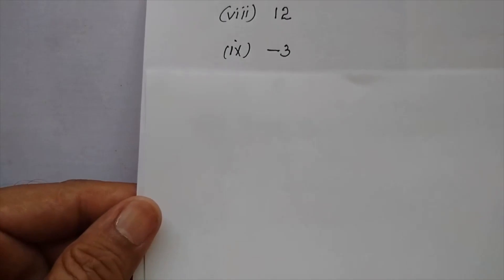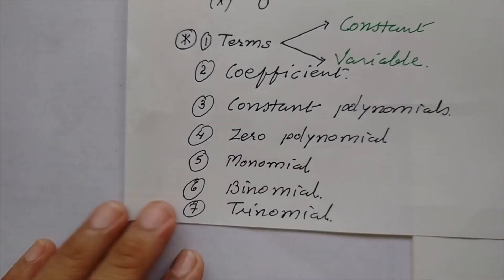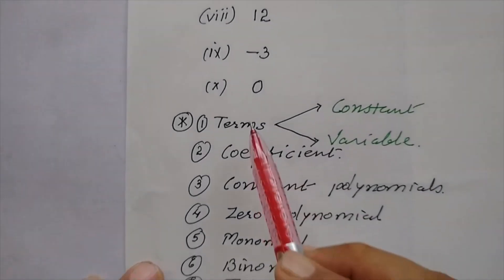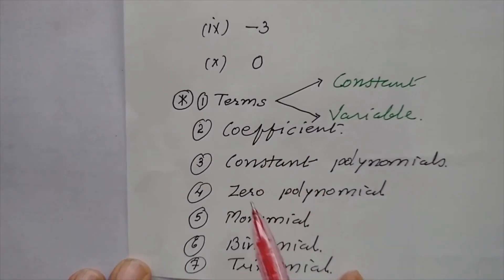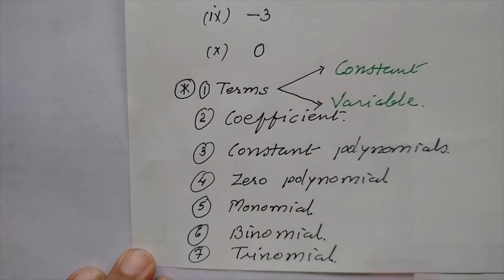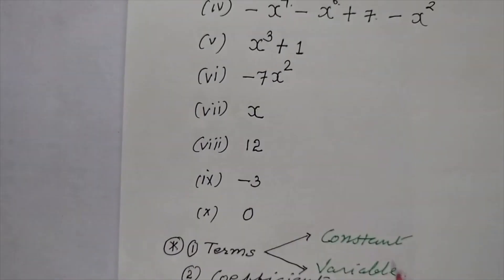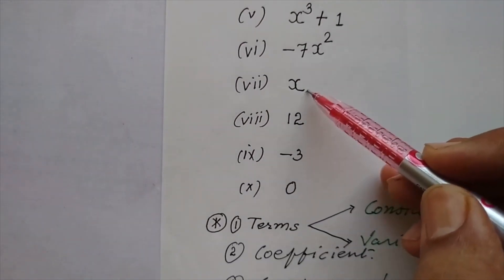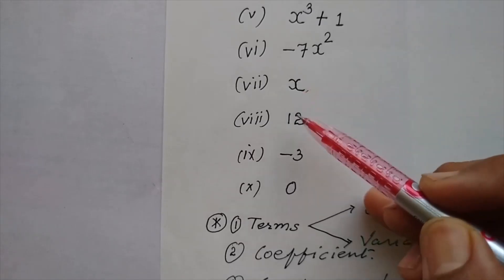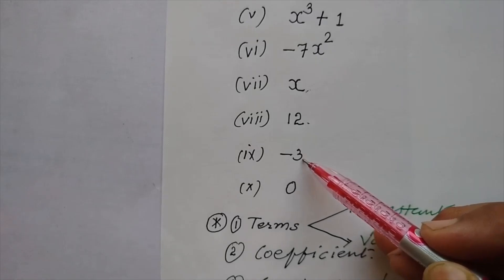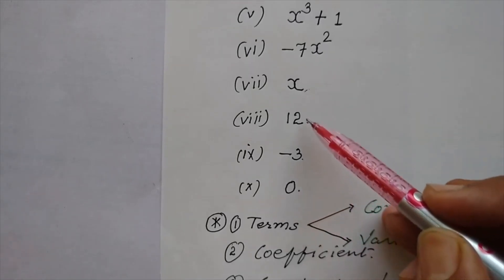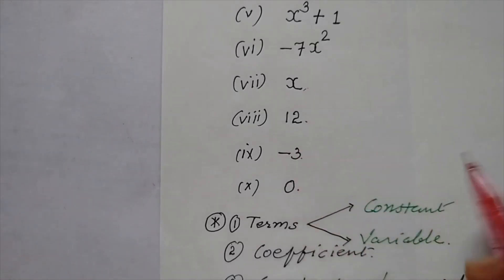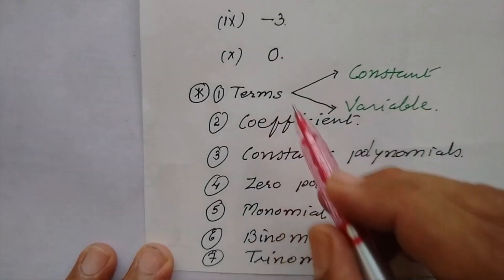Let us study these terminologies, children. We shall study these terms: coefficients, constant polynomial, zero polynomial, monomial, binomial, trinomial. Let us understand one by one, children. These are the examples of polynomials. You may have a doubt about x — is it a polynomial? Yes, children. This is a polynomial. Even these numbers are also polynomials. All are polynomials. Now children, let us understand these terminologies.